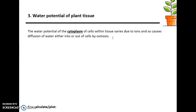Osmosis is the movement of water from an area of higher water potential to an area of lower water potential, down the water potential gradient. When asked to explain what osmosis is, you have to say the words 'higher' and 'lower', not 'high' or 'low', because it has to be relative — higher to lower.